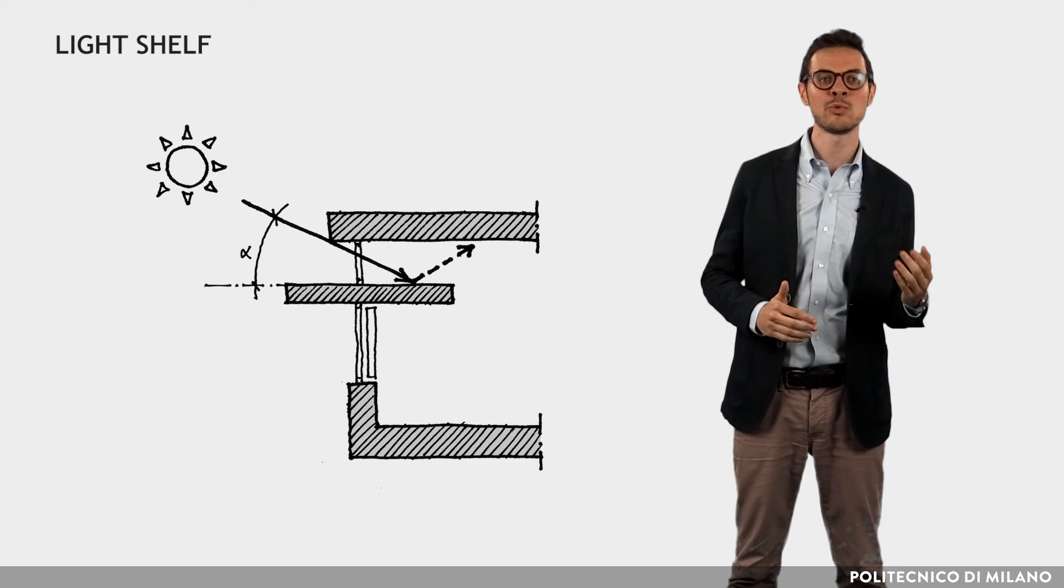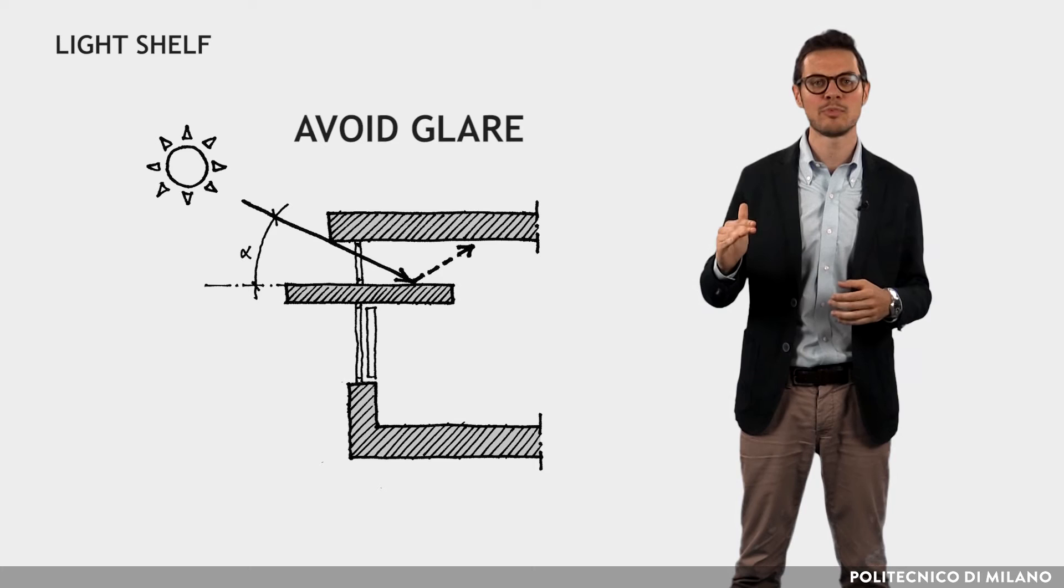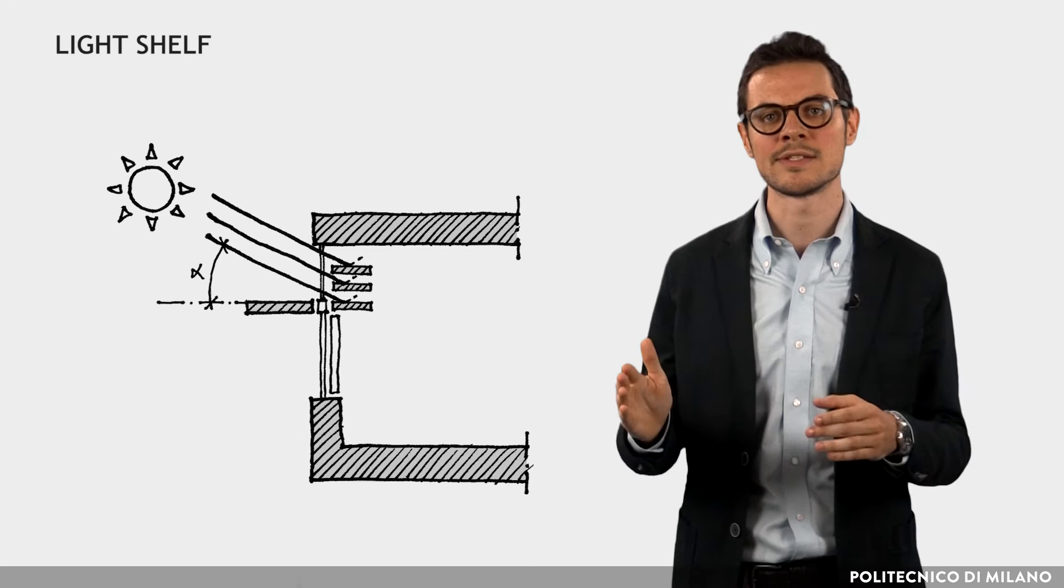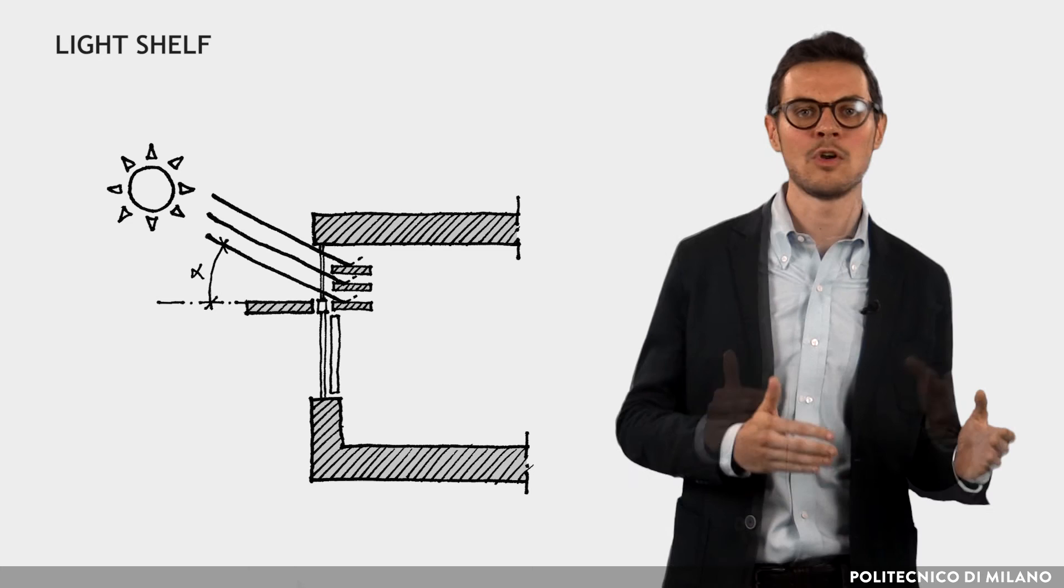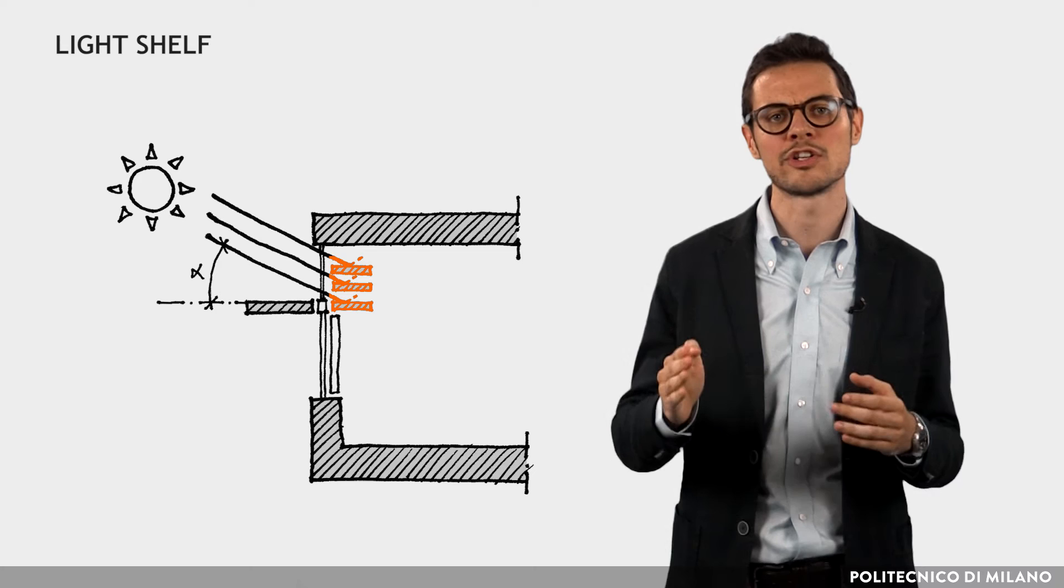The use of a light shelf allows natural lighting even when, to avoid glare, the glass area below is protected with a shading device. For south-east and south-west or north-west and north-east facing façades, the resulting depth of the inner shelf may be excessive.